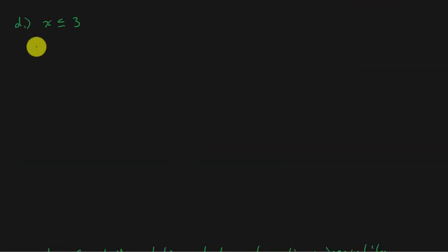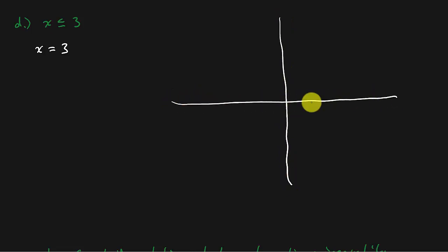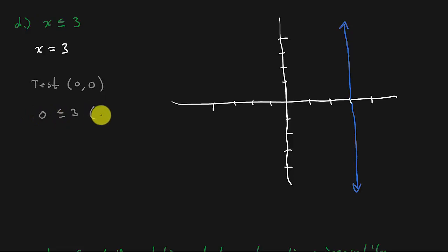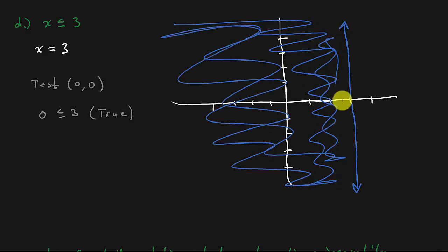Next: x is less than or equal to 3. We've got x equal to a number — that's a vertical line going through where x equals 3. It's going to be a solid line because it's 'or equal to.' Picking test point (0, 0): plugging in 0 for x gives 0 less than or equal to 3, which is a true statement. So I shade that side — the region to the left of the line.